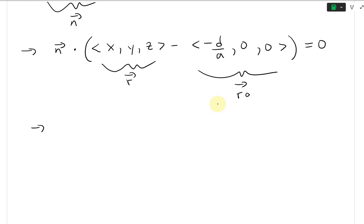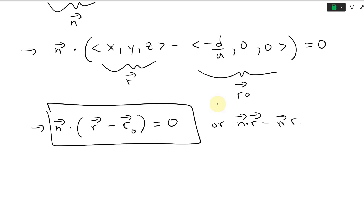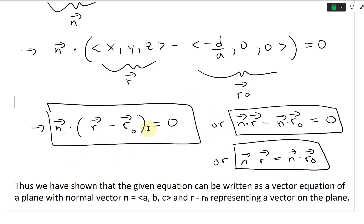So we get n dot (r - r₀) equals zero. We could stop here, or we could multiply this inside: n dot r - n dot r₀ = 0. Then move this over to get n dot r = n dot r₀. These are all vector equations of a plane.